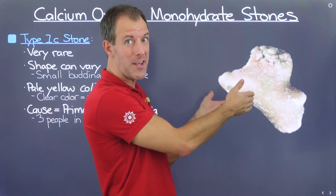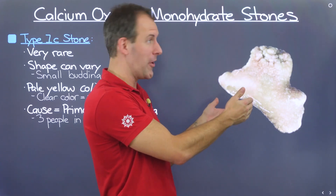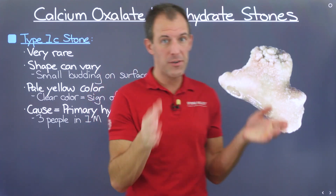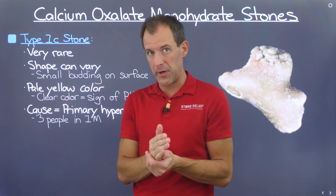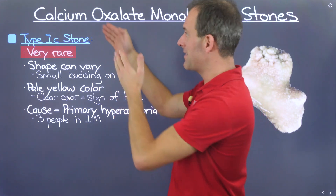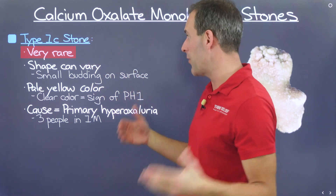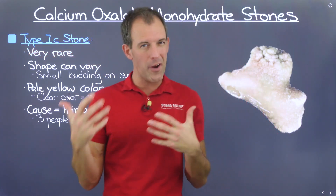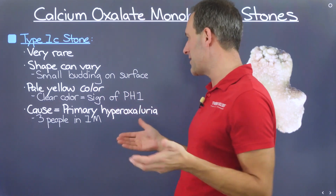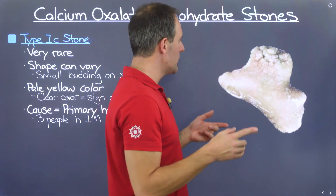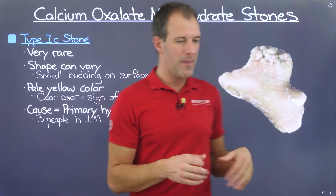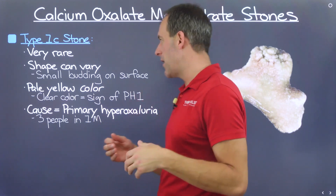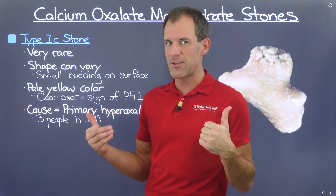Now I want to introduce the type 1C calcium oxalate monohydrate stone variation. This forms as a result of primary hyperoxaluria, which is super rare, and thus this kidney stone type is also super rare. The shape can vary pretty dramatically — there's no real consistency — but there will be more prominent budding visible on some surface areas, which helps identify this stone versus the others.